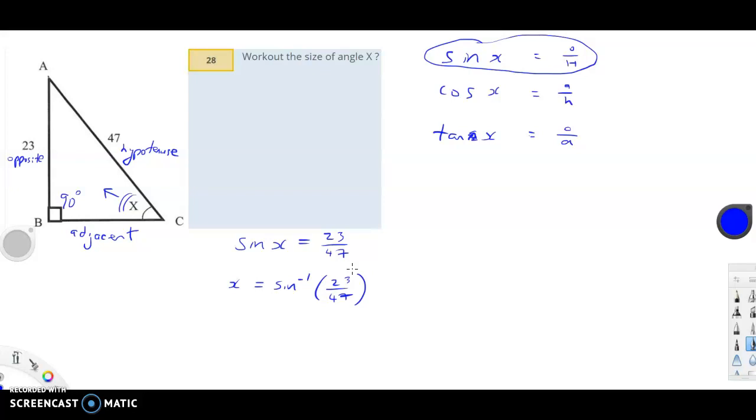So, it should look like what you have on the screen there. And then use the fraction key and put in 23 on top and 47 below. Close the bracket, press equals, and I get